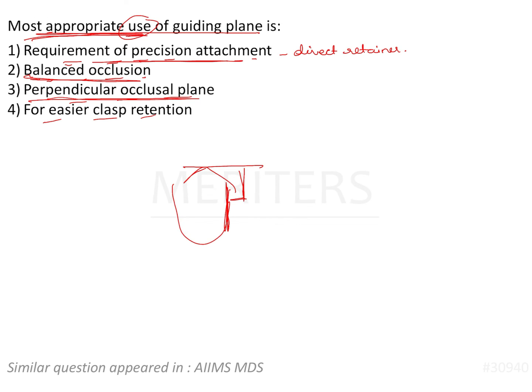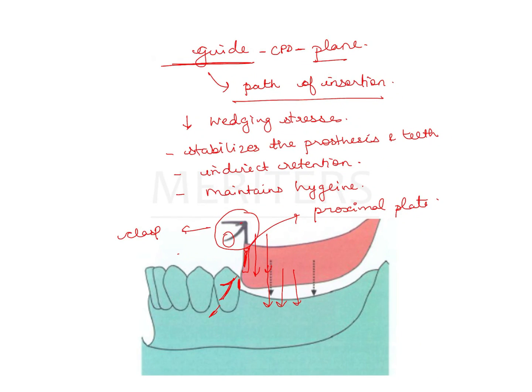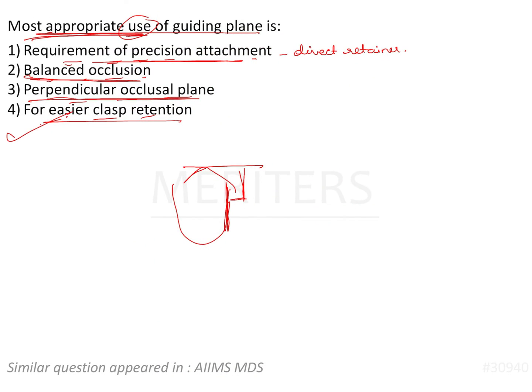Lastly, for easier clasp retention — the clasp sits in its position because of the function of the guide plane. So the correct answer is option 4: for easier clasp retention.